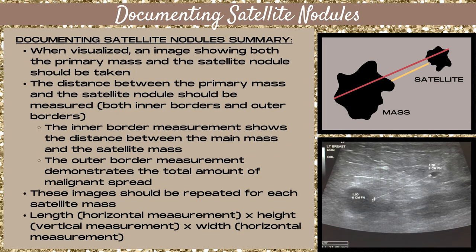When a satellite mass is visualized, an image showing both the primary mass and the satellite nodule should be taken, as long as you can get them both on the same screen together. Often changing the field of view to a sector orientation will help you with this. You want to measure the distance between the primary mass and the satellite nodule — both the inner borders and the outer borders.